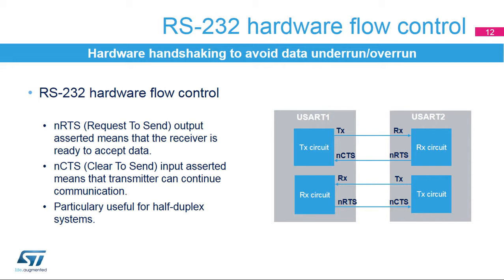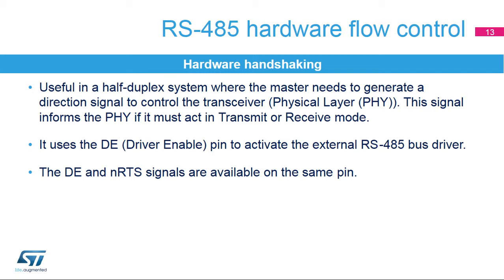Both signals are active low. For serial half-duplex communication protocols like RS-485, the master needs to generate a direction signal to control the transceiver or physical layer. This signal informs the physical layer if it must act in send (TX) or receive (RX) mode. In RS-485 mode, a control line is used. The driver-enabled pin is used to activate the external transceiver control. DE shares the pin with NRTS.